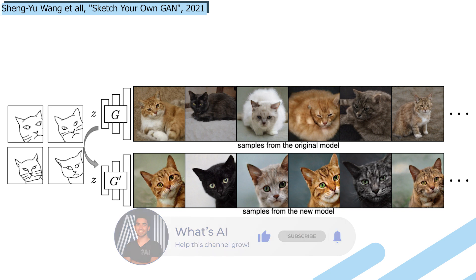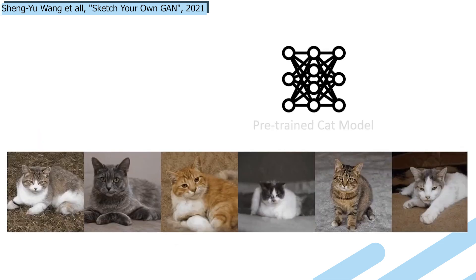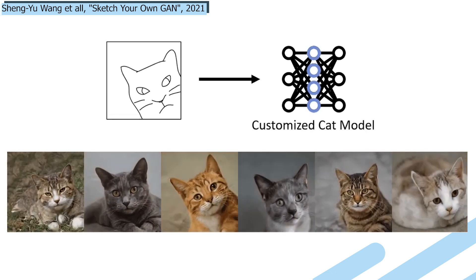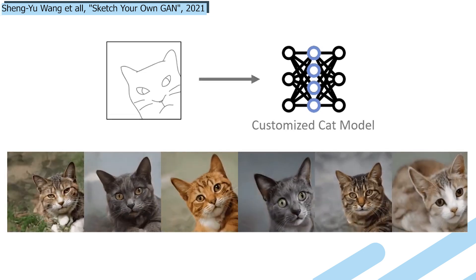Of course, there's nothing special in generating a cat in a specific position, but imagine how powerful this can be. It can take a model trained to generate anything, and from a handful of sketches, control what will appear while conserving the other details and the same style.